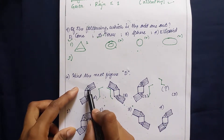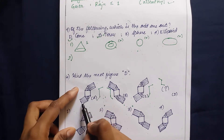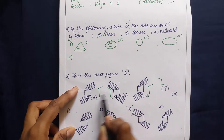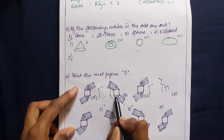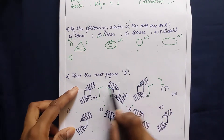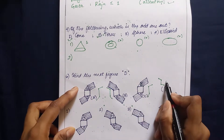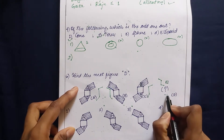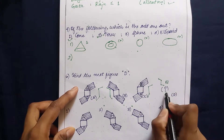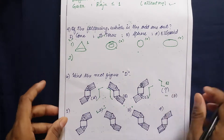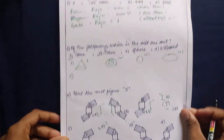Considering the nature of the shapes inside the patterns: the first has circle and circle, then square and square. Similarly, this one has a square on top, so the next should have a square on top and a circle at the bottom. The option that satisfies this is option two. Option two is the correct answer.